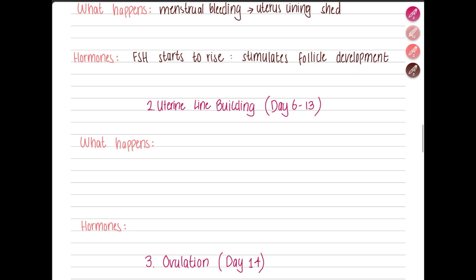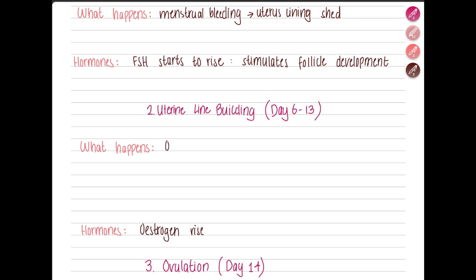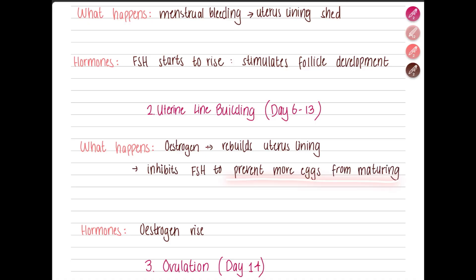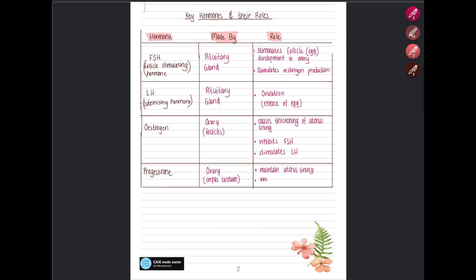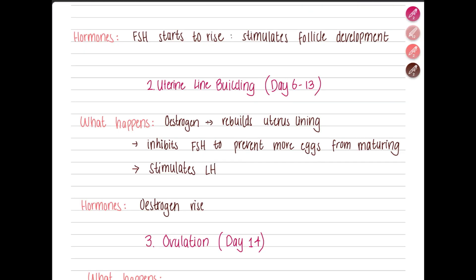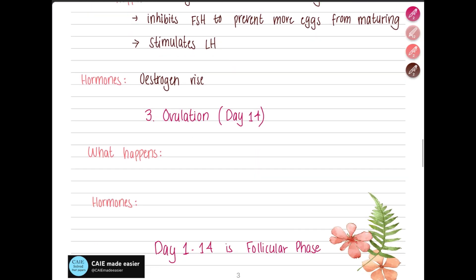From days 6 to 13 — after the menstruation has stopped — estrogen is produced by the follicle that started to develop. Estrogen rebuilds the uterus lining. It also inhibits FSH to prevent more eggs from maturing; only one egg matures per cycle. Estrogen inhibits FSH but stimulates LH.